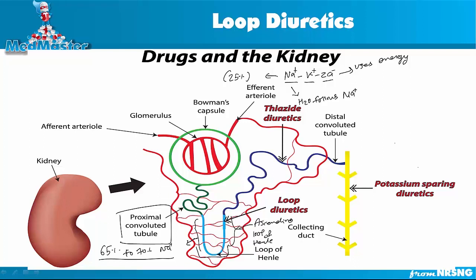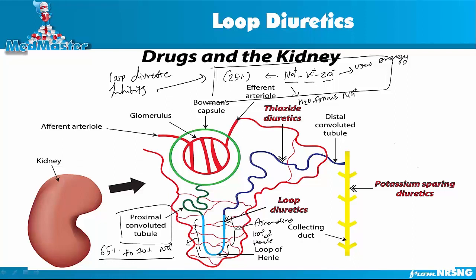Loop diuretics inhibit this whole pump and the entire reabsorption process. When sodium doesn't get reabsorbed, potassium doesn't get reabsorbed, chloride doesn't get reabsorbed, and water is not going to get reabsorbed either. The contents travel from the ascending loop of Henle to the collecting ducts, and from there sodium, water, potassium, and chloride all get excreted through urine, since the loop diuretic inhibits the pump.